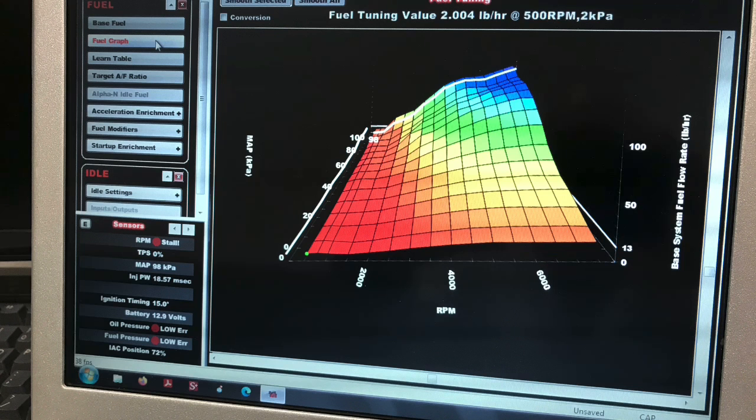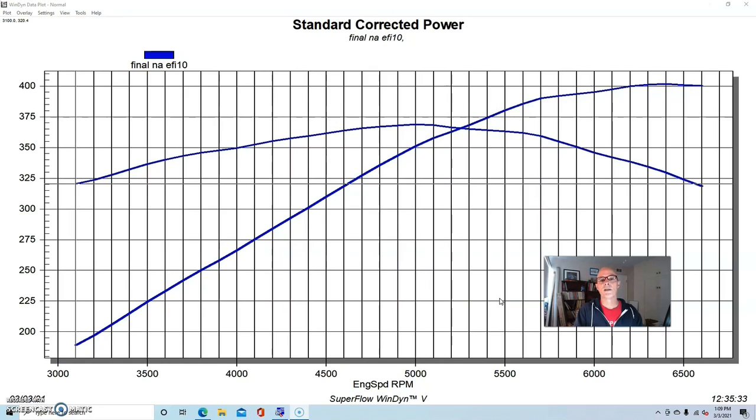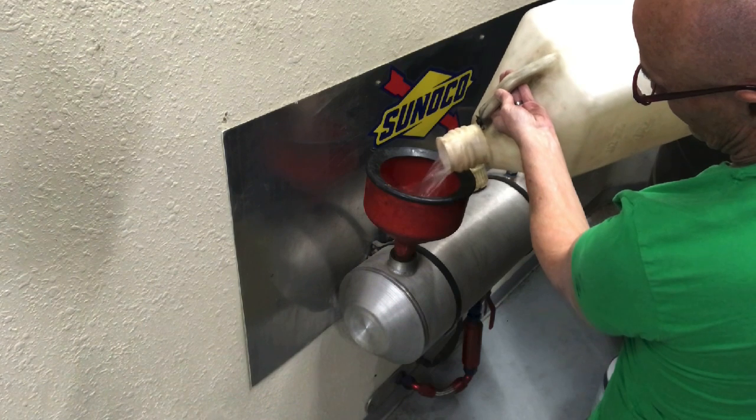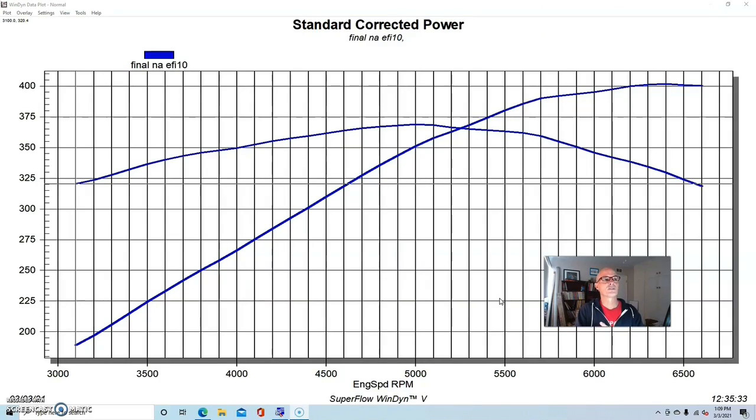And we also did some tuning on it, running it on pump gas in part one. And then in part two, we stepped up to E85 and tried to find out how much power we can make with E85 and more timing. But this test is going to show the difference between the throttle bodies. Before we can do that, we'll do a quick recap here and then we can jump right into the throttle body testing.